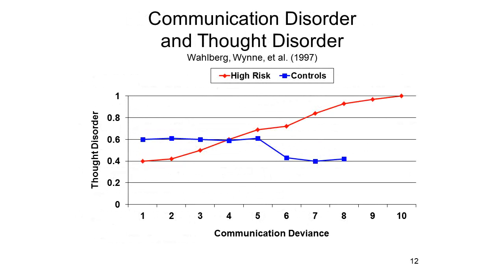Here are the results of the study. There is a very clear interaction between genetic risk for schizophrenia and communication deviance within the family on thought disorder in the adopted children. High risk children adopted into families with low levels of communication deviance didn't show much evidence of thought disorder. But high risk children adopted into families with high levels of communication deviance showed high levels of thought disorder. For control children who were not particularly at risk for schizophrenia, the amount of communication deviance in the family didn't make any difference. Communication deviance interacts with genetic risk to produce thought disorder, an index of psychological deficit in schizophrenia among these high risk adoptees.